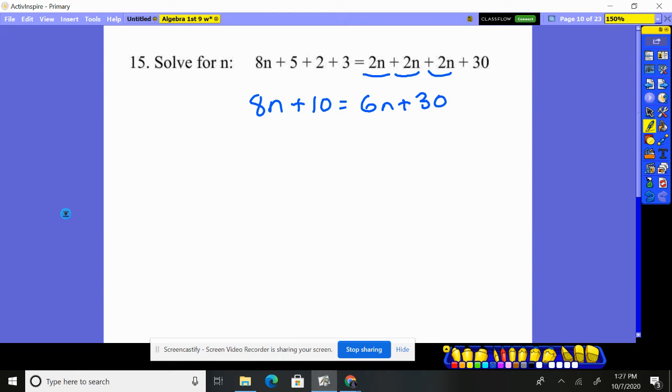So now nothing else. There's no other common like terms. So we can go ahead and move our smaller variable over. So I subtract 6n from both sides. That'll give me 2n plus 10 equals 30.